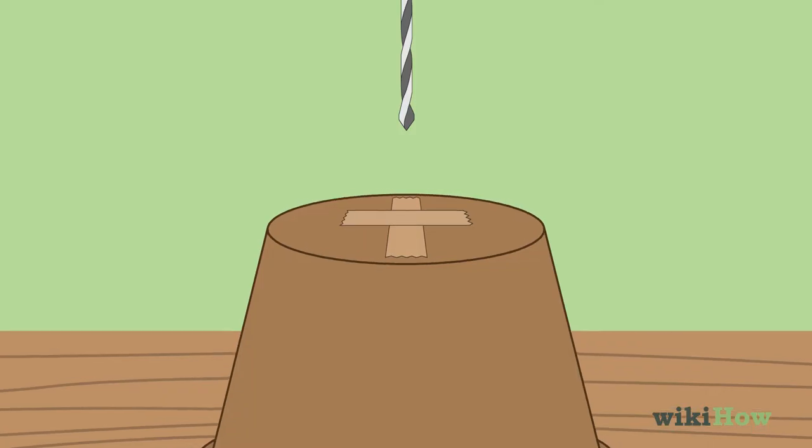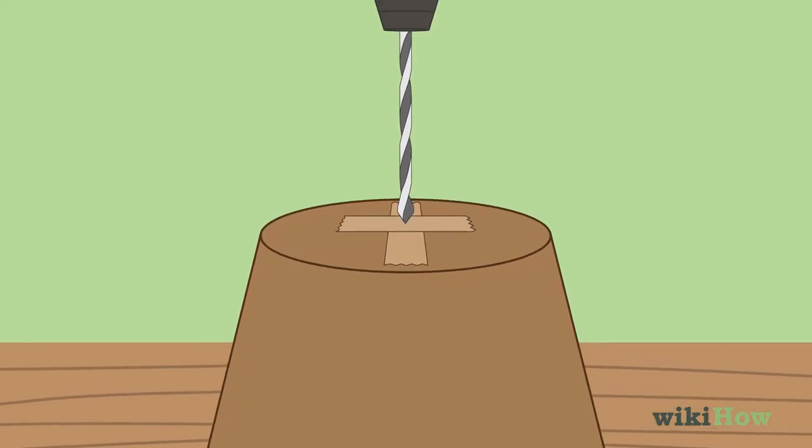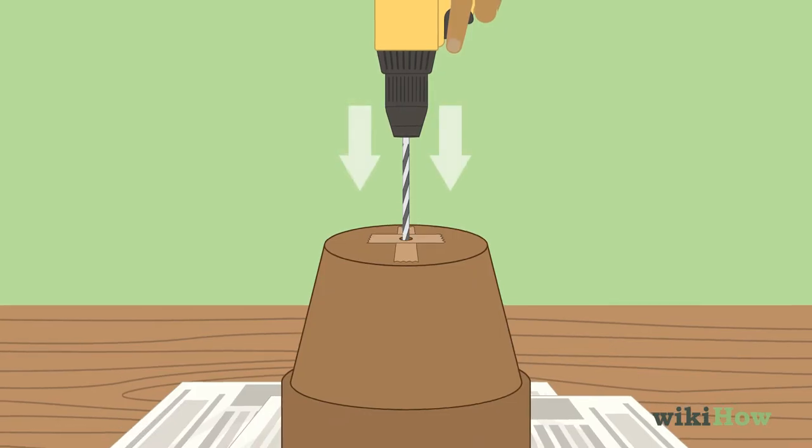Place the drill bit at the center of the piece of tape and begin drilling slowly. Hold the drill straight and steady and apply gentle pressure so you don't break the pot.